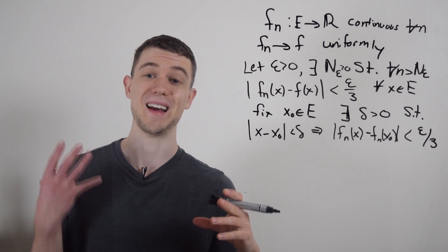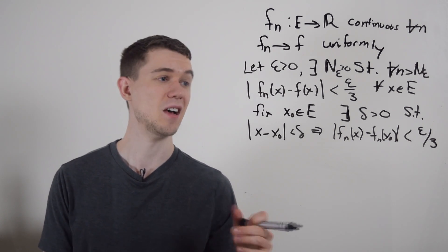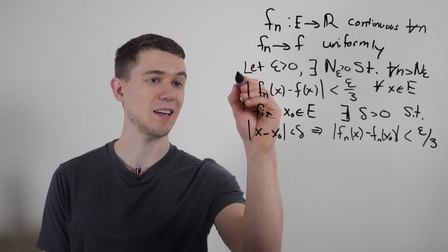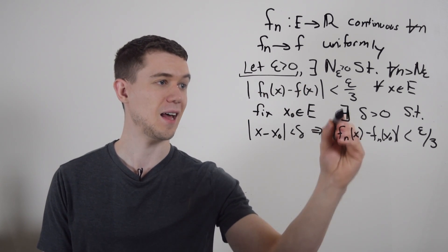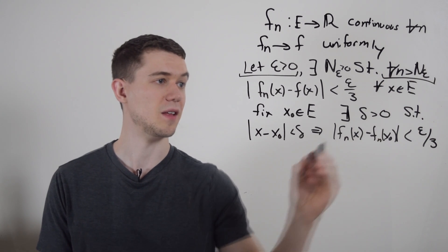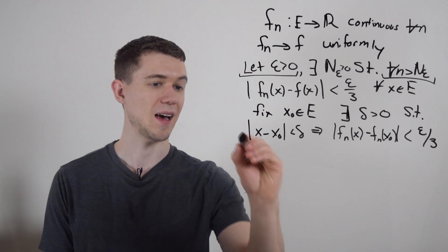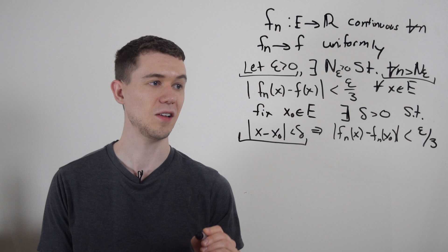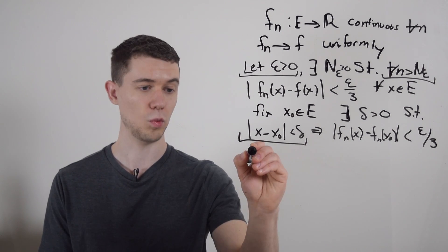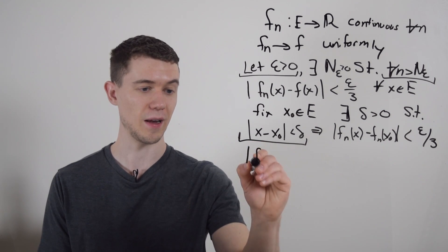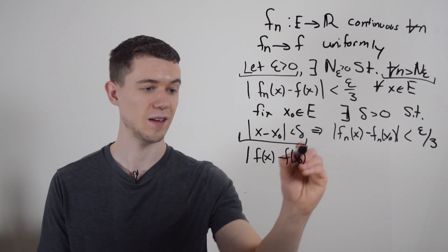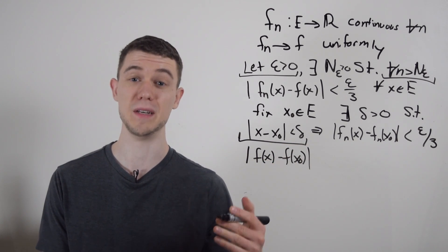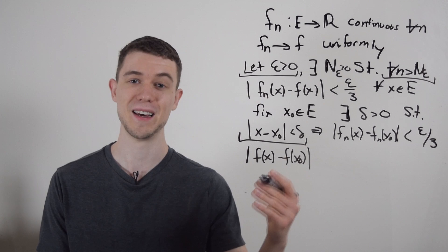And now I want to show you that f is continuous. So letting epsilon greater than zero, and letting all n greater than this n, and letting x minus x naught less than delta, here's what we'll have, we want to show that f of x minus f of x naught is less than epsilon. That's what it means for a function to be continuous at x naught.